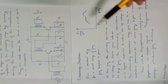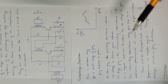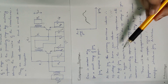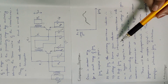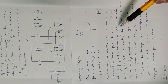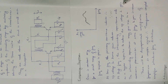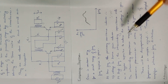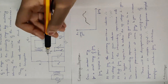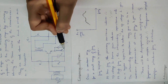At low frequency, the output voltage is reduced and so the gain is reduced. At high frequency, interwinding capacitance and inter-electrode capacitance act as bypass paths, which reduce the output voltage and gain.